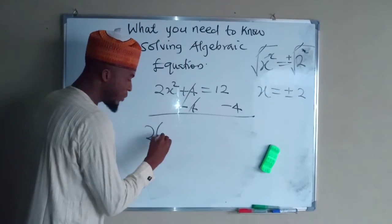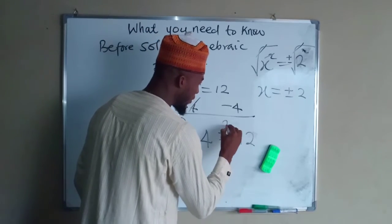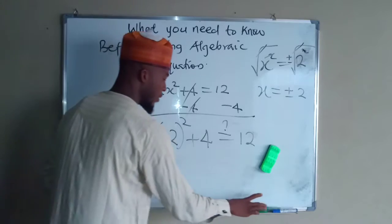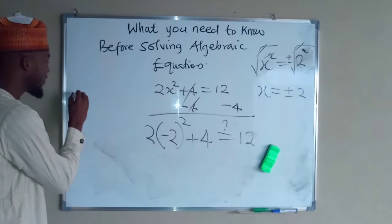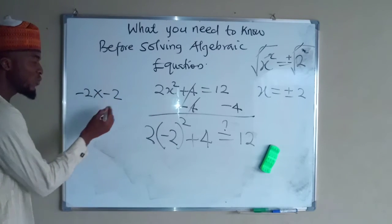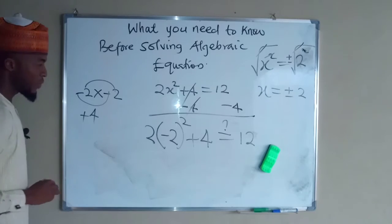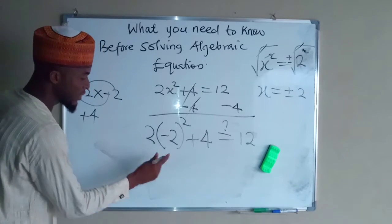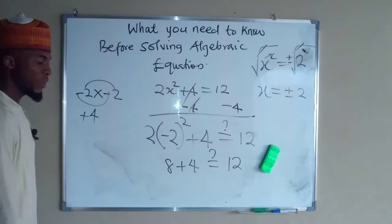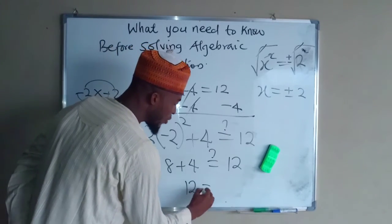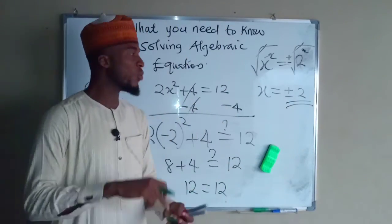Now let us test negative 2: 2 multiplied by negative 2 squared plus 4 — is this equal to 12? Negative 2 squared means negative 2 times negative 2; negative times negative is positive, so 2 times 2 is 4, giving positive 4. Then positive 4 times 2 is positive 8; 8 plus 4 is 12. Therefore 12 equals 12, so the real values of x are either positive 2 or negative 2.